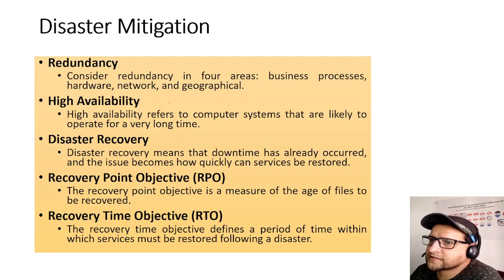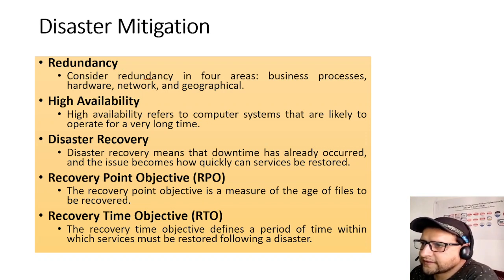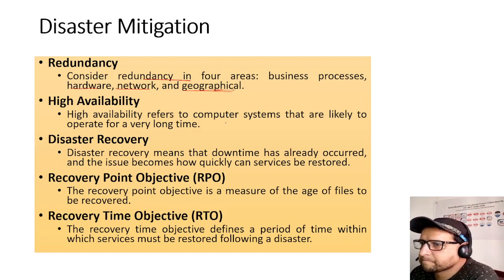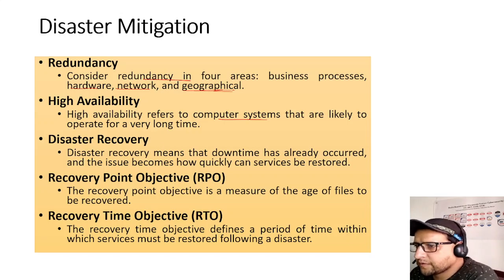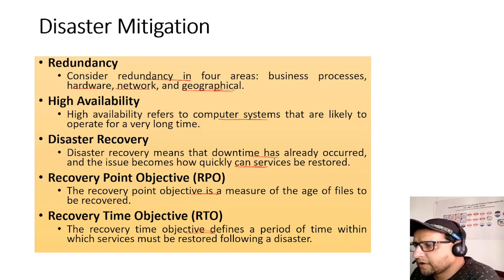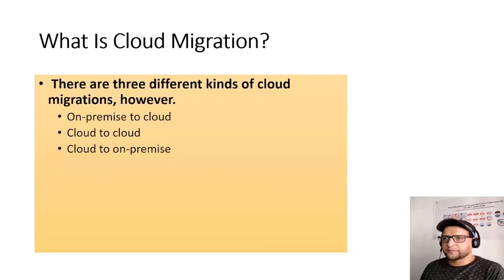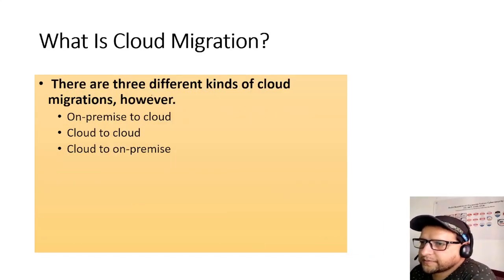Disaster migration design: consider redundancy in four areas — business process redundancy, hardware redundancy, network redundancy, and geographic redundancy. High availability refers to systems that operate for a very long time with very little downtime. Disaster recovery addresses restoring services after downtime has already occurred. RPO is the measure of the age of files to be recovered; RTO is the period within which service must be restored following a disaster. Work Recovery Time covers testing after restoration, and MTD (Maximum Tolerable Downtime) equals RTO plus WRT.